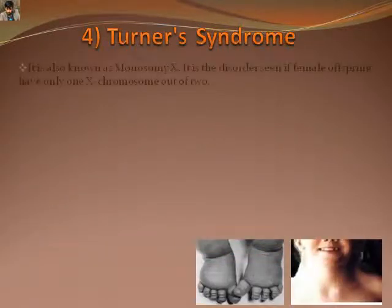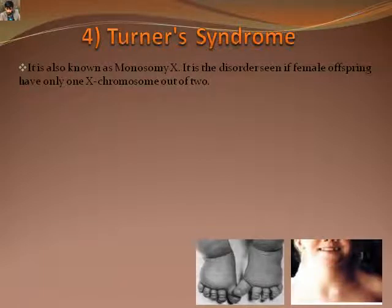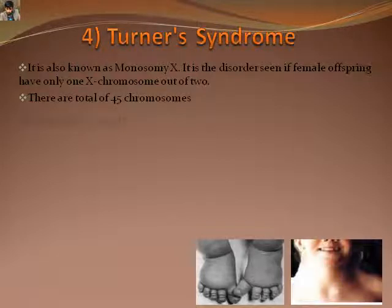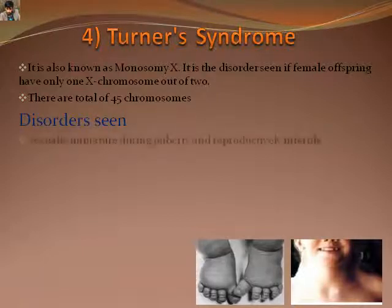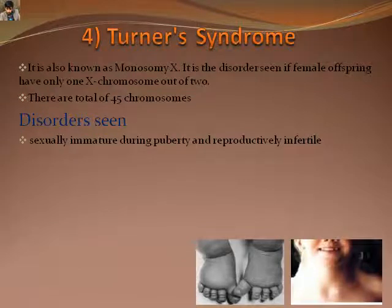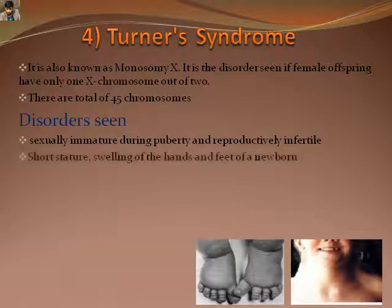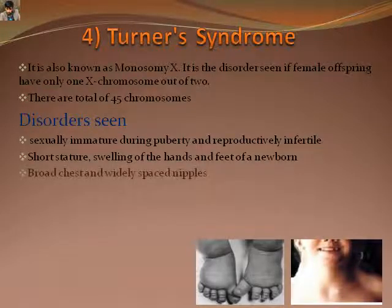Turner syndrome, also named monosomy X, is a disorder seen only in females. Having only one X chromosome, the total number of chromosomes is 45 instead of 46. Some noticeable changes seen in those affected are sexual immaturation, widely spaced nipples, swollen hands and feet, thyroid problems, and lack of concentration and memory.